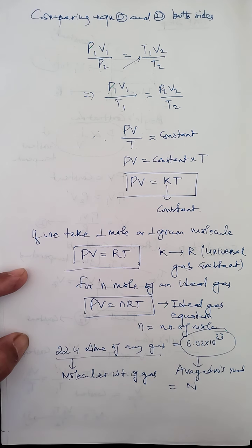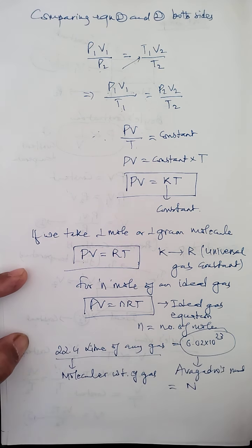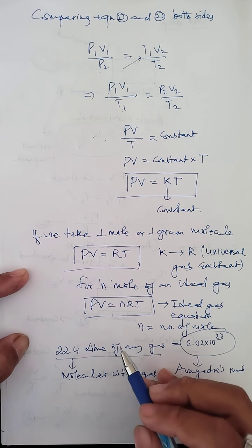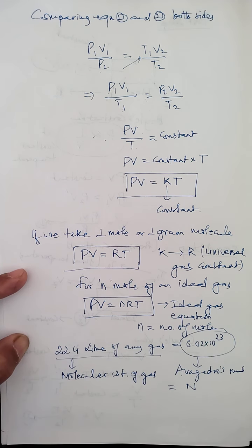The relation PV = nRT is called the ideal gas equation, also called the perfect gas equation. Remember, this equation has been obtained using gas laws that are strictly true only for an ideal gas, so this relation is strictly true only for an ideal gas. I have now derived the expression for the ideal gas equation, and further topics will be discussed in the next YouTube video.